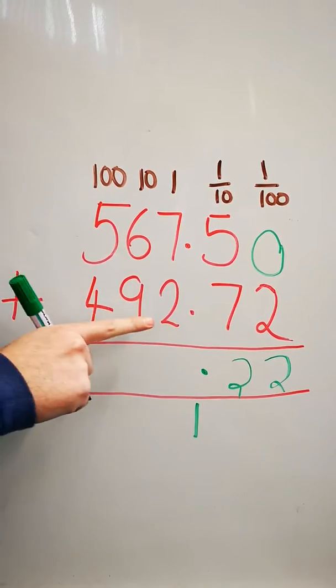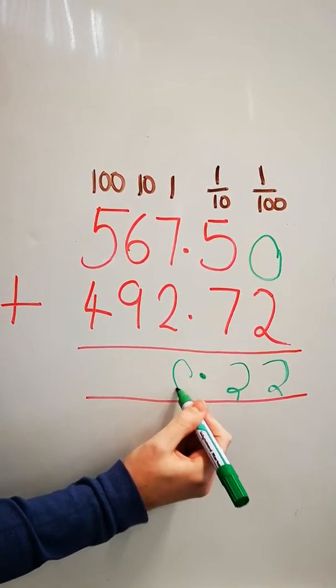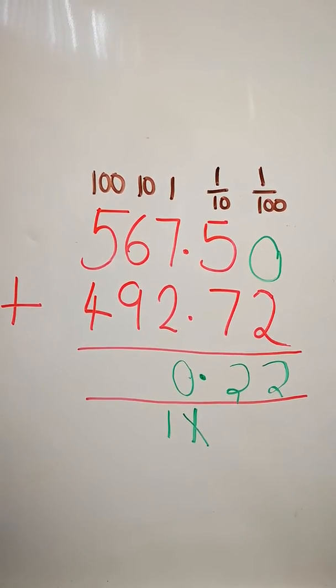If I add seven and two together, I get nine, but I need to include the extra one down here. So I now have ten, and I'm going to carry that one over to the tens column.